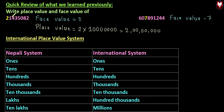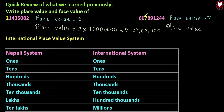So the place value of 2 is here. Now here we have the place value. The digit we have is 7, so the place value calculation is 7 × 1.